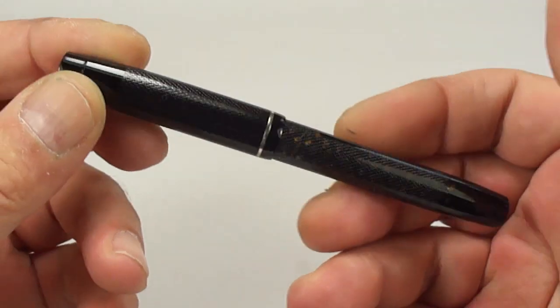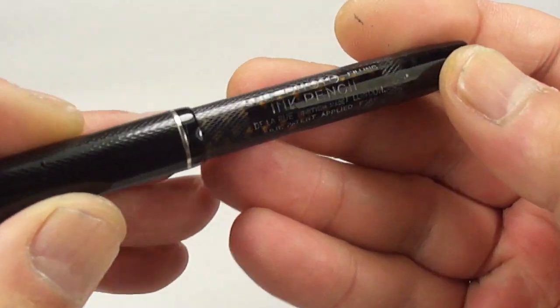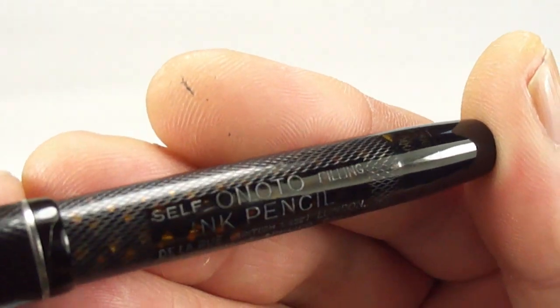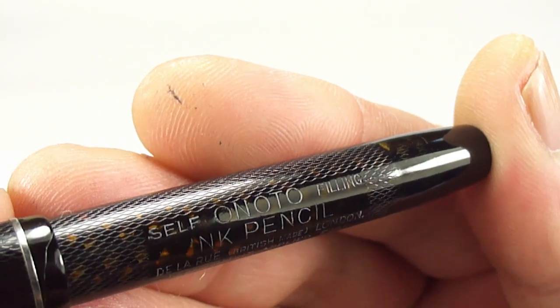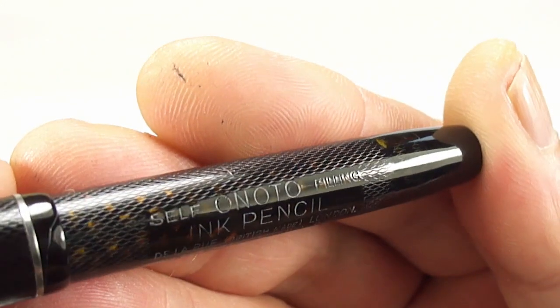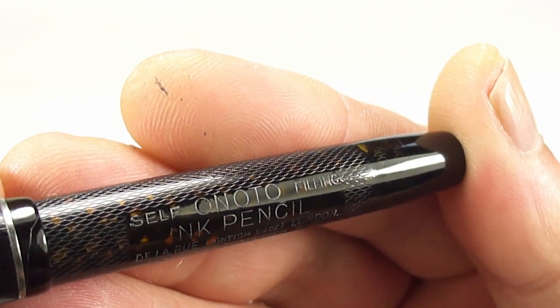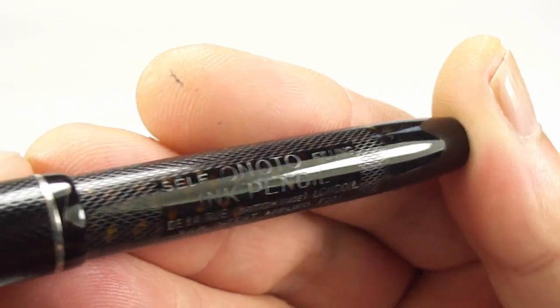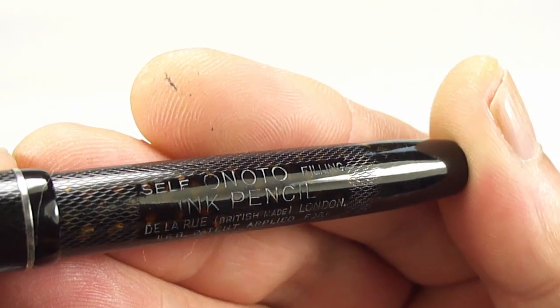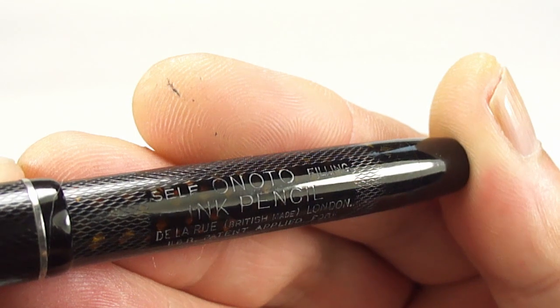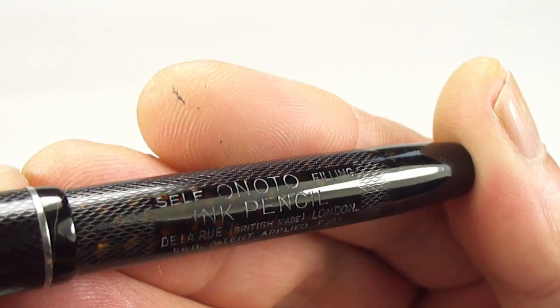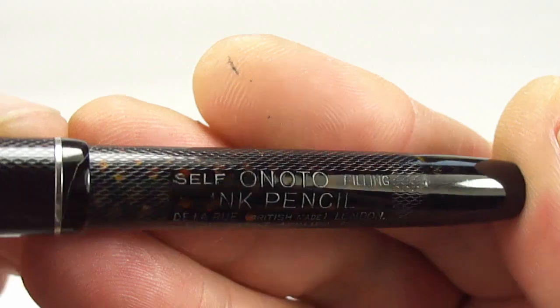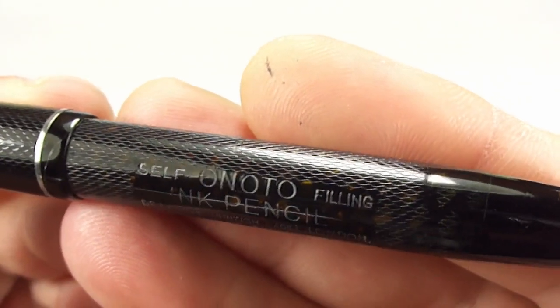Let's carry on and show you the barrel imprint. Let's keep it nice and still. It says to the left 'self,' and then in the middle it's actually got 'Onoto ink pencil,' and then to the right there you can see 'filling,' so it's a self-filling pen. If we just move it up a little bit, you can see it says 'De La Rue, British made, London,' and then all the way underneath there it's got 'BR patent applied for.' So it's got a nice clear barrel imprint.